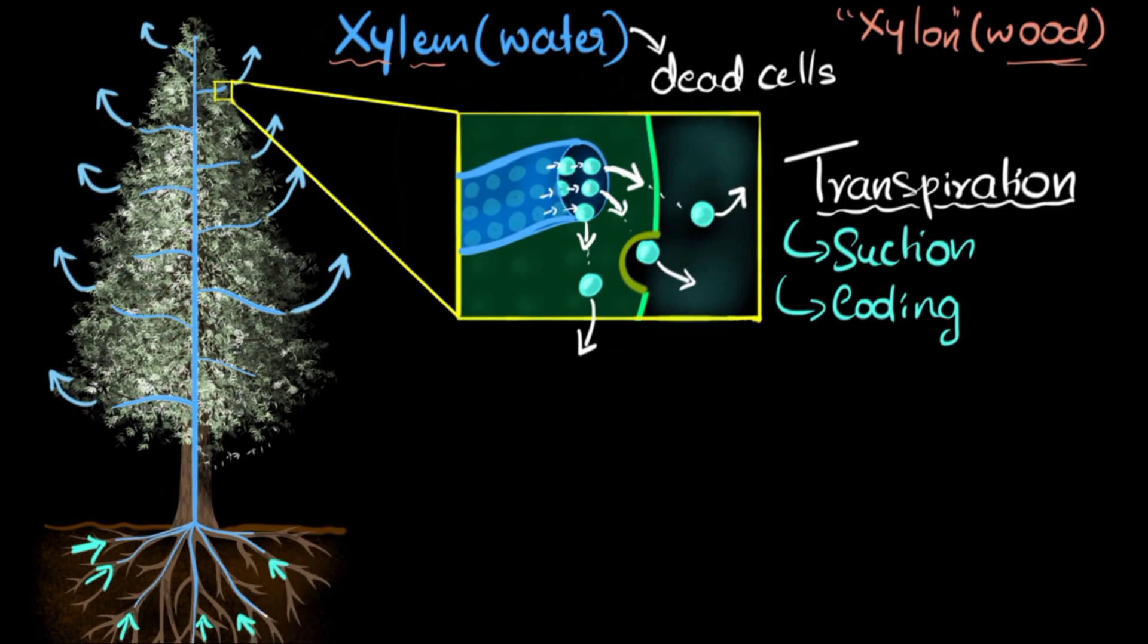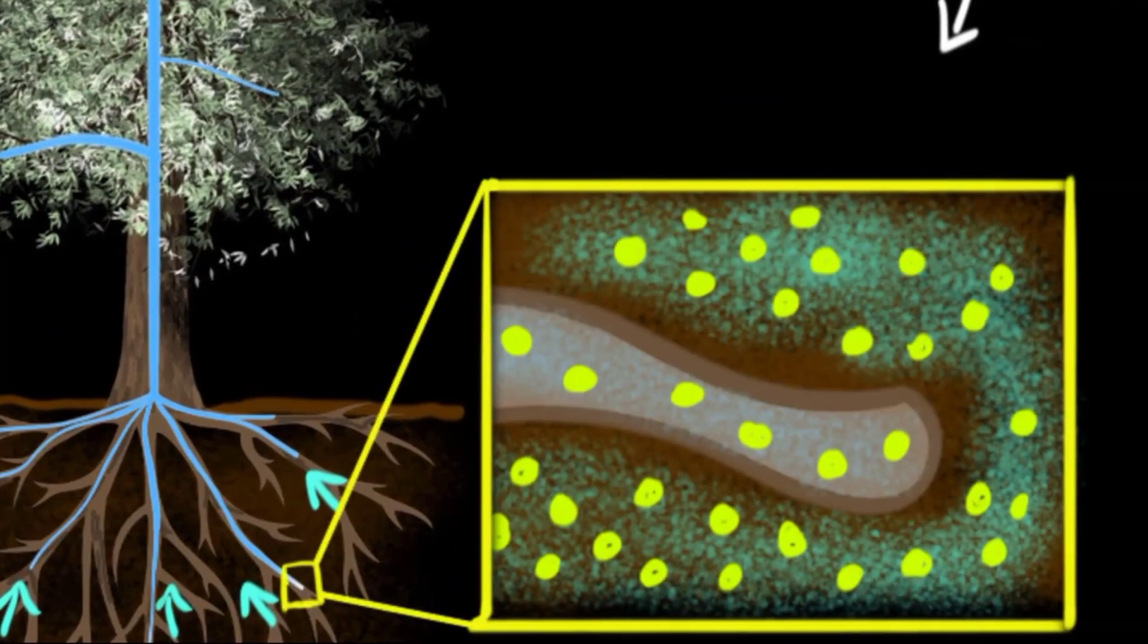But how does that work? Well, to quickly give you an overview, here we have zoomed into the tip of one of the tiny root hairs. And what you're seeing over here is the water, and these dots represent minerals. So we have water and dissolved minerals in the soil, and we also have water and dissolved minerals in these root hairs. And the concentration is pretty much even because diffusion makes sure of that.